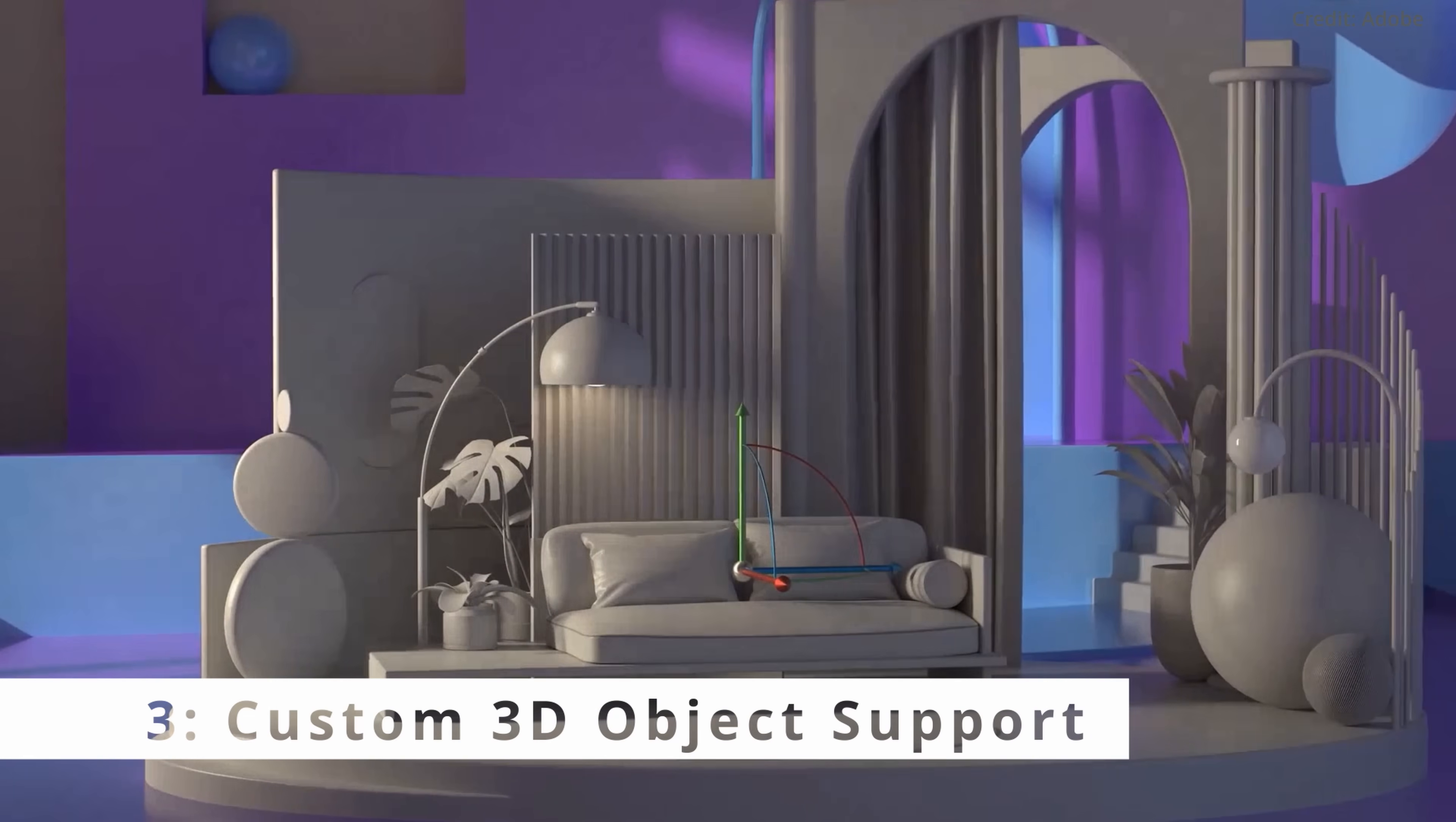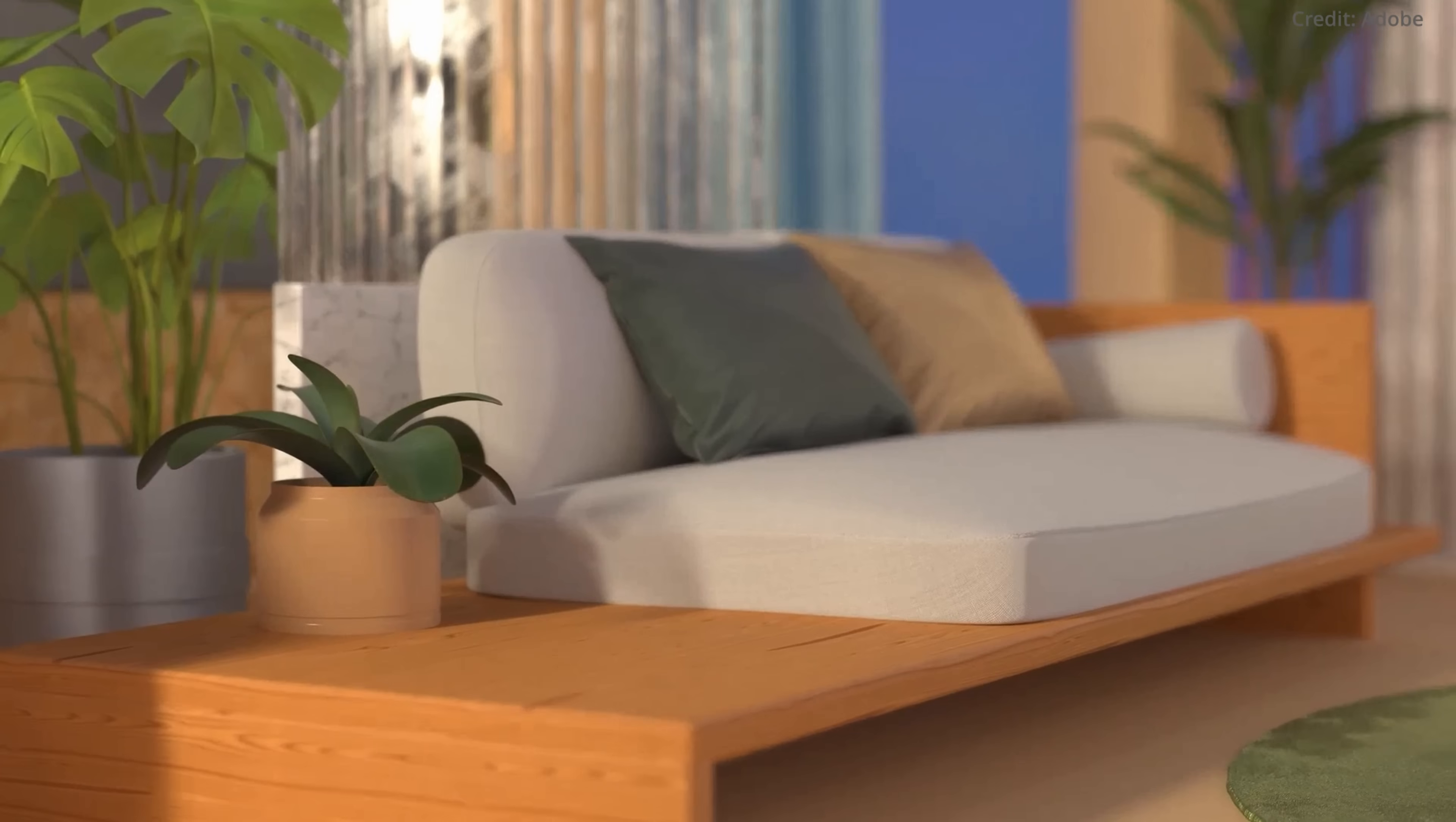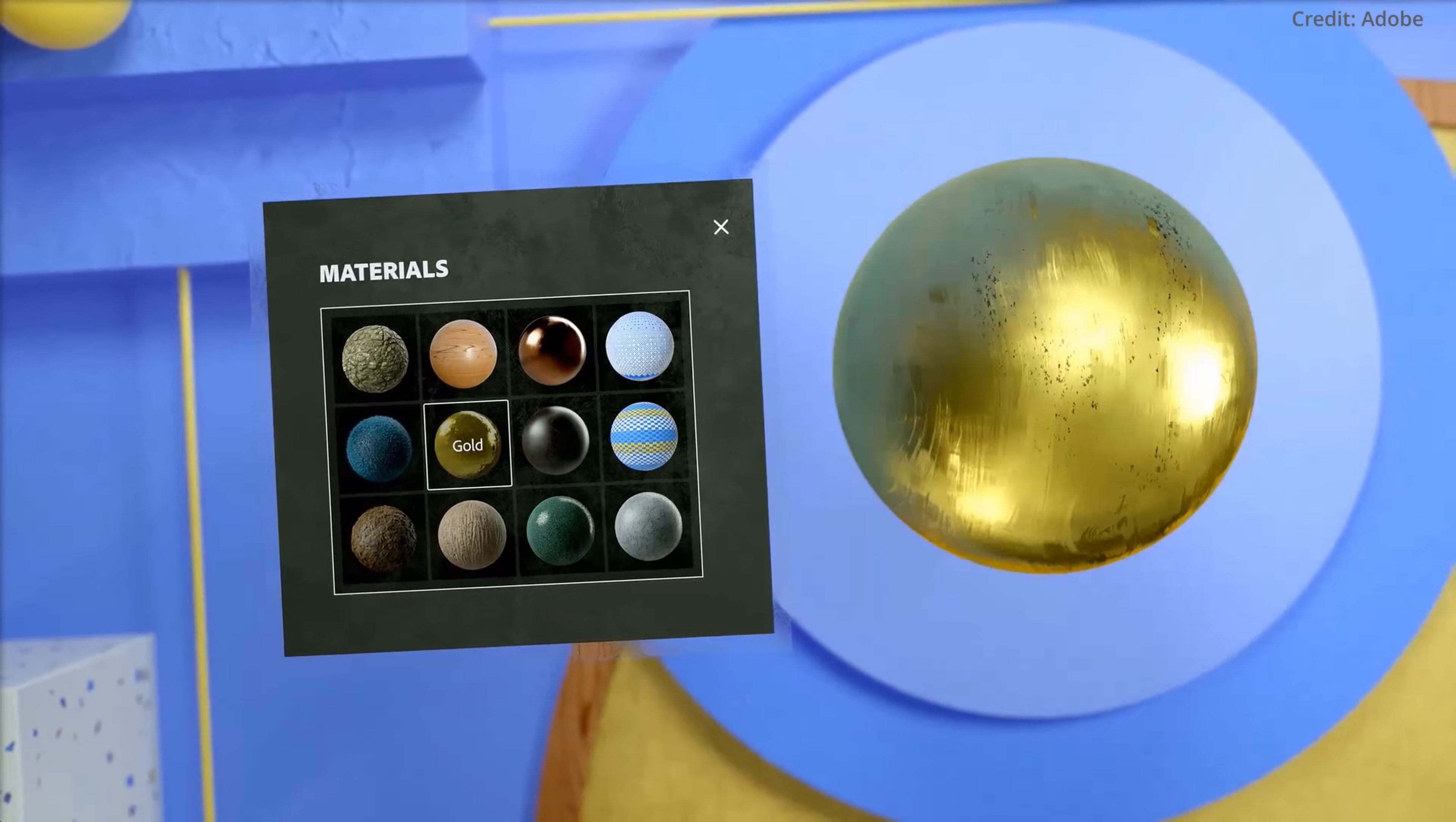Number three, custom 3D object support. Expanding on its customization capabilities, Gingerbread offers support for user-uploaded 3D objects. This means you can use these custom objects as part of your scene, making AI image generation less random and more personalized. The custom 3D object support stands as a testament to Adobe's commitment to facilitating efficiency and ease in the designer's workflow.